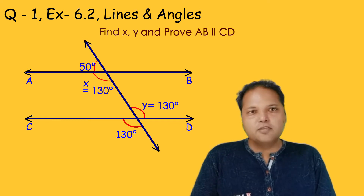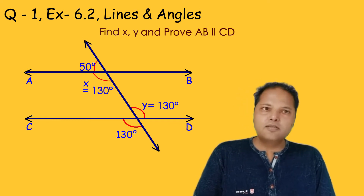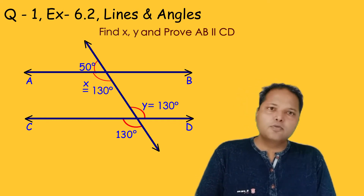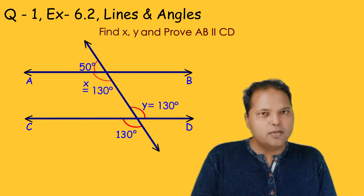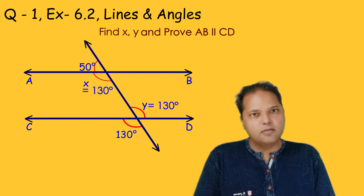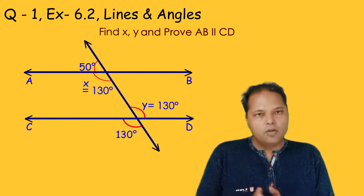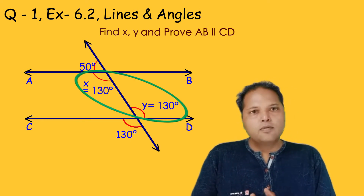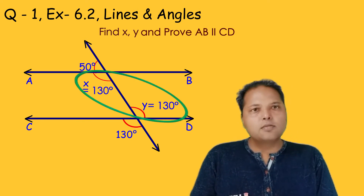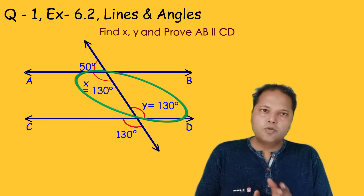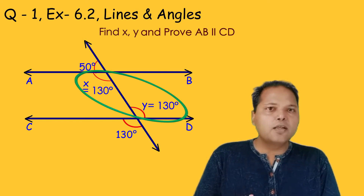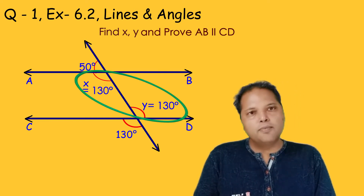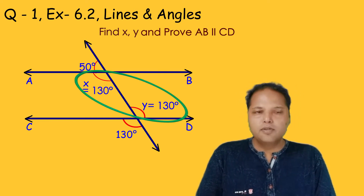In this figure, the transversal is intersecting the two lines AB and CD such that the alternate angles are equal to each other, and hence we can say that AB and CD are parallel to each other.